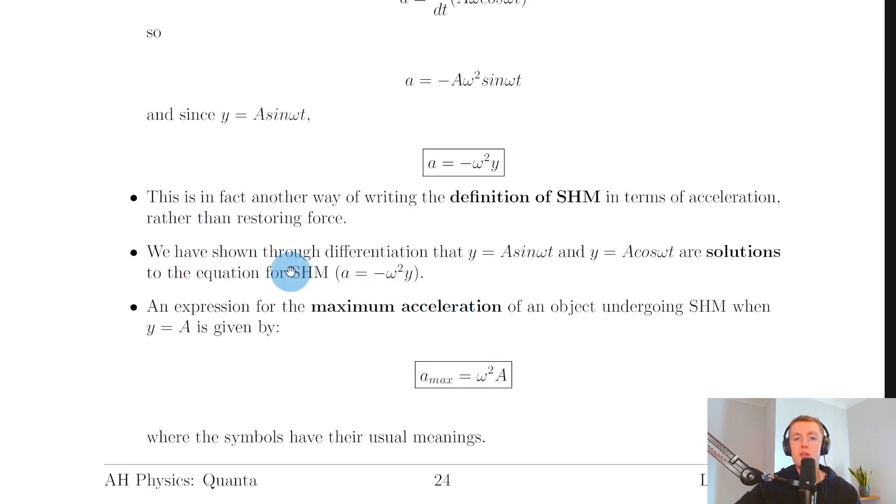So what we have done is shown through differentiation that y equals a sine omega t and y equals a cos omega t are solutions to the equation for SHM, that is, a equals minus omega squared y.